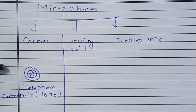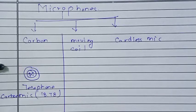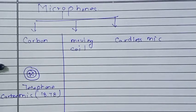The carbon microphone was the first microphone, made in 1878. Three scientists were involved in its development: David Edward Hughes, Emil Berliner, and Thomas Edison. At that time, it was called a transmitter.